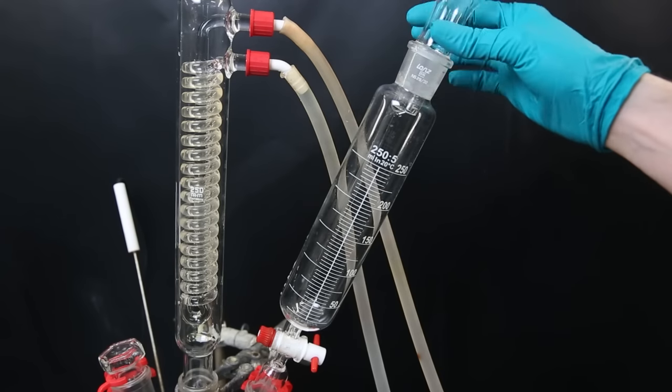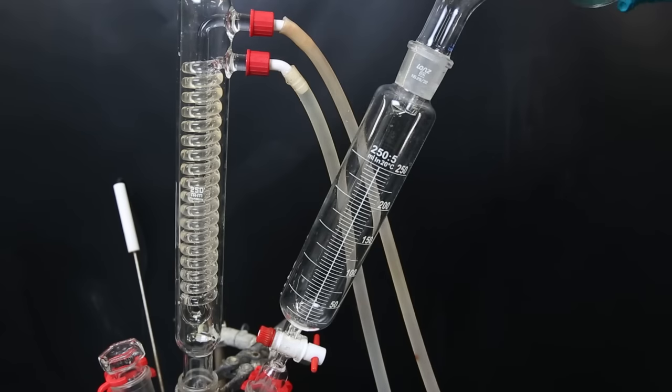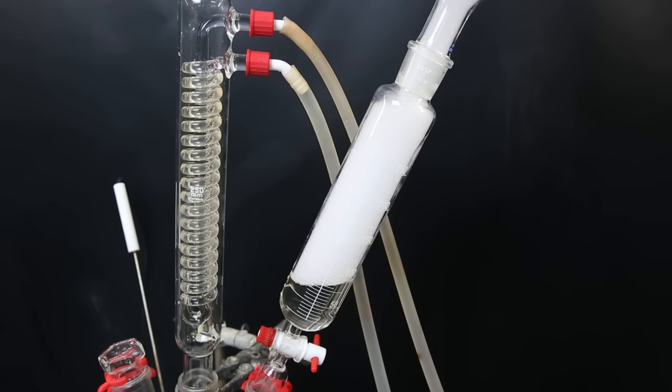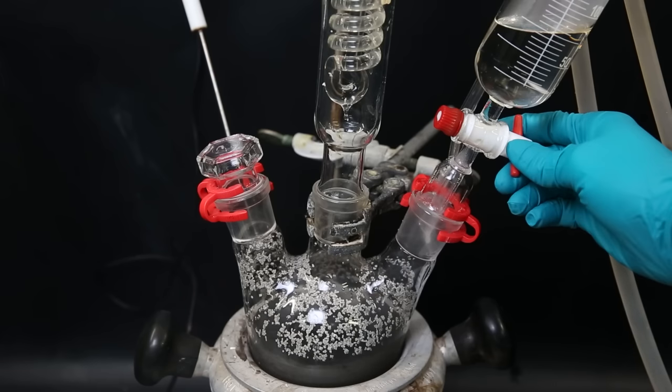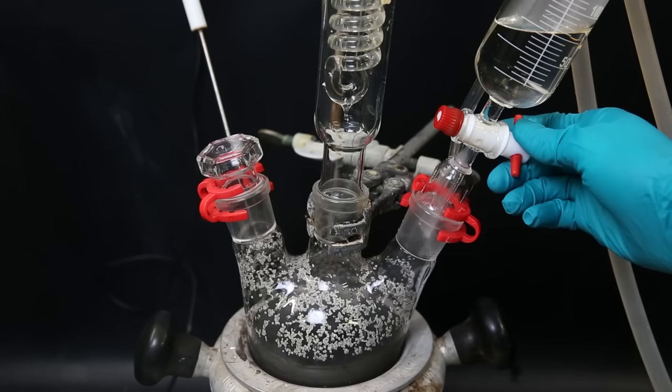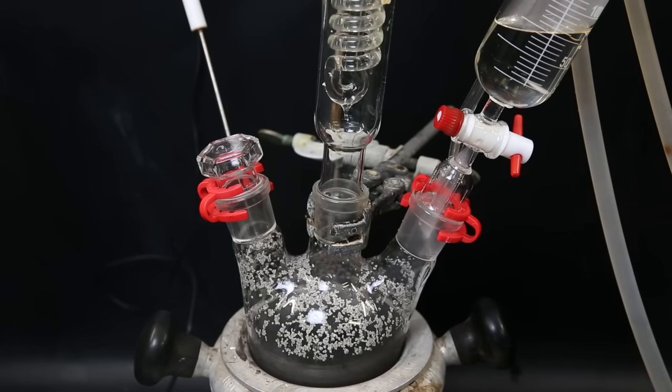Now to the dropping funnel, I quickly add in the tin 4-chloride toluene mixture without bothering to do it with a syringe. I stopper it again and then slowly start dropping the mixture into the reaction flask. I add it at such a rate so that it is refluxing normally.